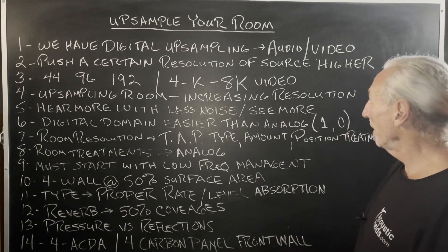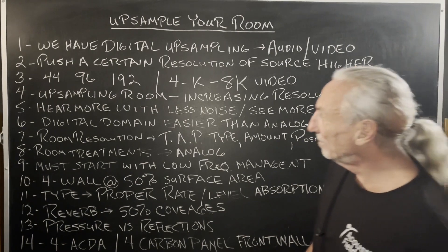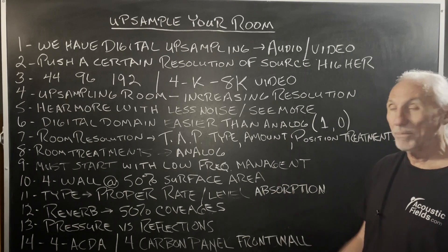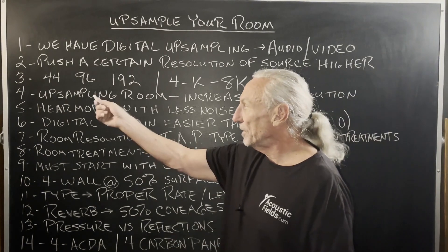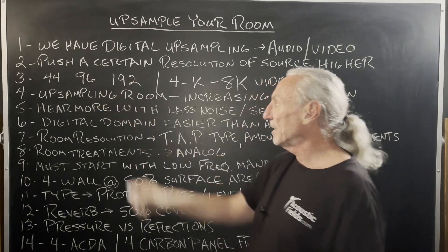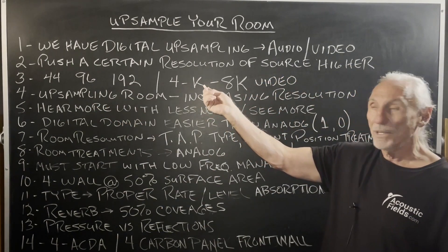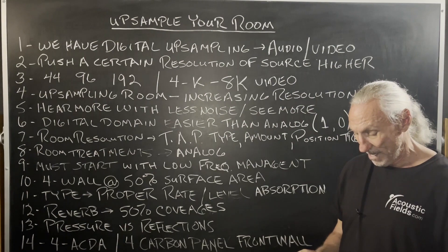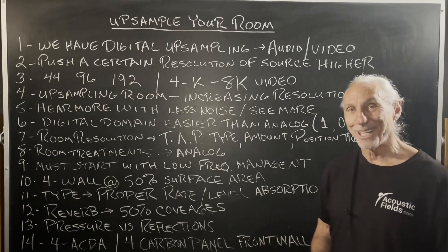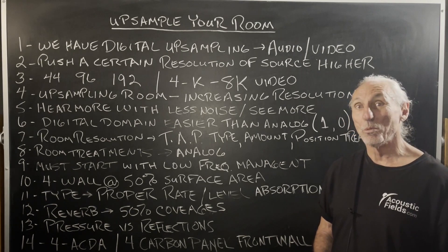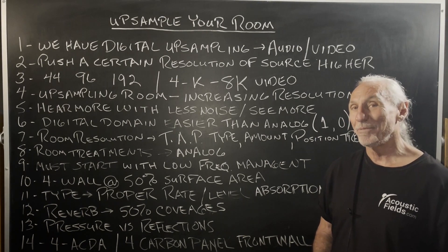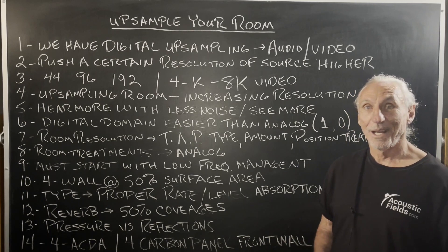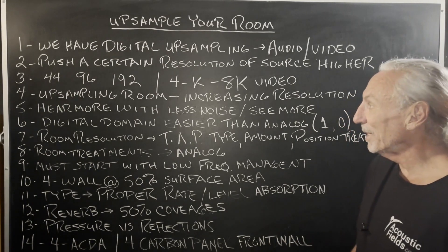We have digital upsampling for audio and video — you see it all the time. We get a certain resolution of source and we want to increase it, so we upsample. Sampling is a term for the digital domain. Remember, we started at 44, 96, 192. 4K for video, 8K video now. We have a new 8K screen in our studio and it's dramatic — it's about 50% better than 4K. They'll probably push the envelope even higher.